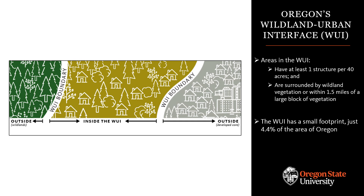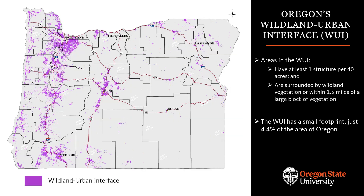If this description of the WUI seems a little vague, rest assured that we mapped the WUI based on specific rules and criteria developed in a multi-stakeholder process and using the best available data describing where structures are located in Oregon. In order to be in the WUI, an area must have at least one structure per 40 acres, and it must be surrounded by wildland vegetation or within a mile and a half of a large block of wildland vegetation to account for the potential of ember showers. When we apply these specific criteria to the best available data, we generate a map of the WUI that looks like this. Overall, the WUI covers about 4.4% of the area of Oregon.